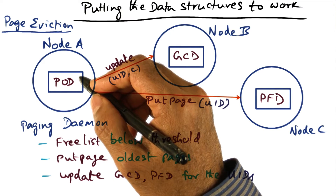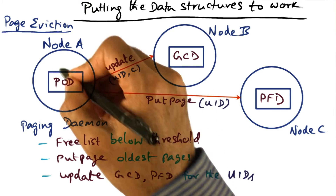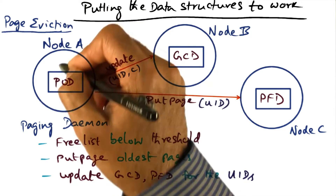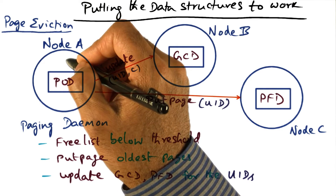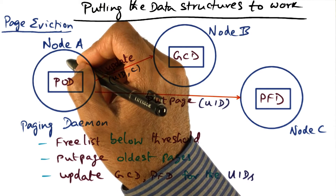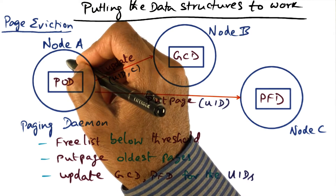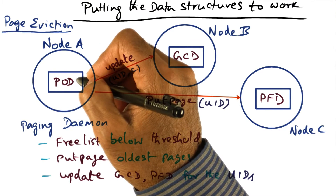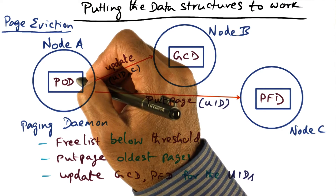When a page fault happens, the key thing is to make sure that we service the page fault so that we get the page and restart the execution that has been installed on this node. That's the important thing to do. The less important thing, but something that needs to happen in the universe of things managed by GMS, is to also send the victim page from this node to the target node. That's part of the algorithm for eviction on page fault.